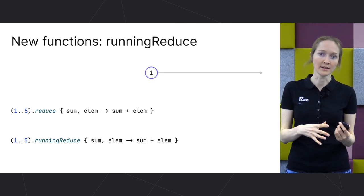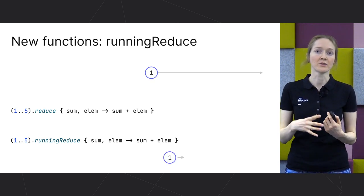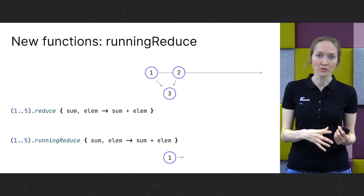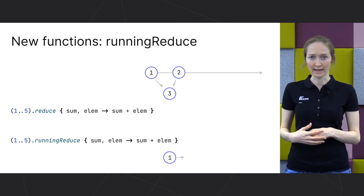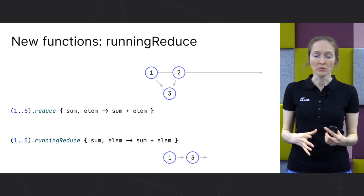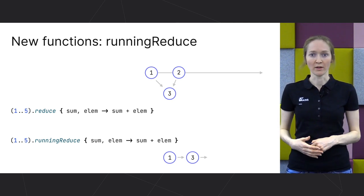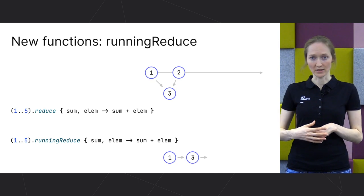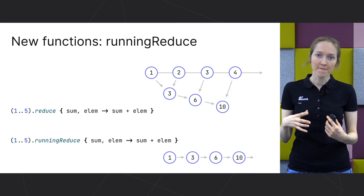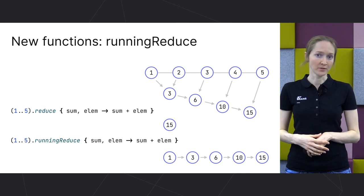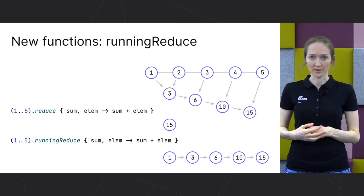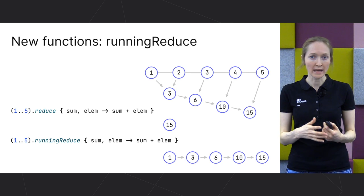First, we analyze the first element, number 1. runningReduce already returns it as the first element in the resulting list. Then we analyze the second element and combine the first two elements according to the lambda rule — in this case, summing two numbers. runningReduce returns this sum as a new intermediate result, whereas reduce would return nothing at this point since not all elements have been analyzed yet. We continue, and runningReduce keeps returning intermediate values. Finally, when the collection is over, reduce returns the result. runningReduce returns all the intermediate steps, with the final result as the last element in the list — that's the difference between reduce and its running counterpart.